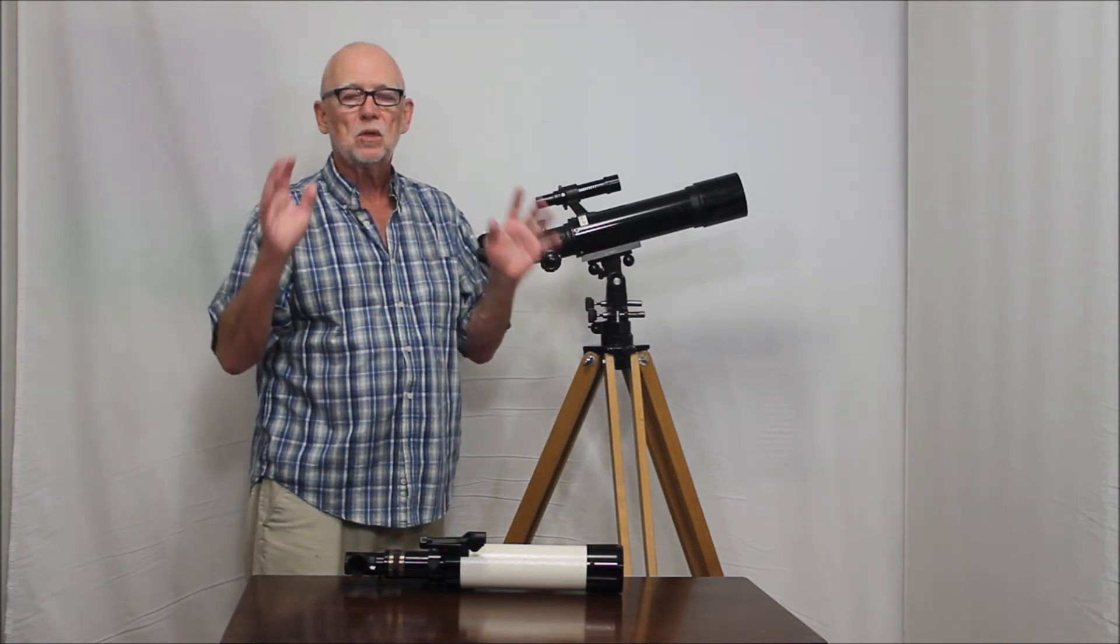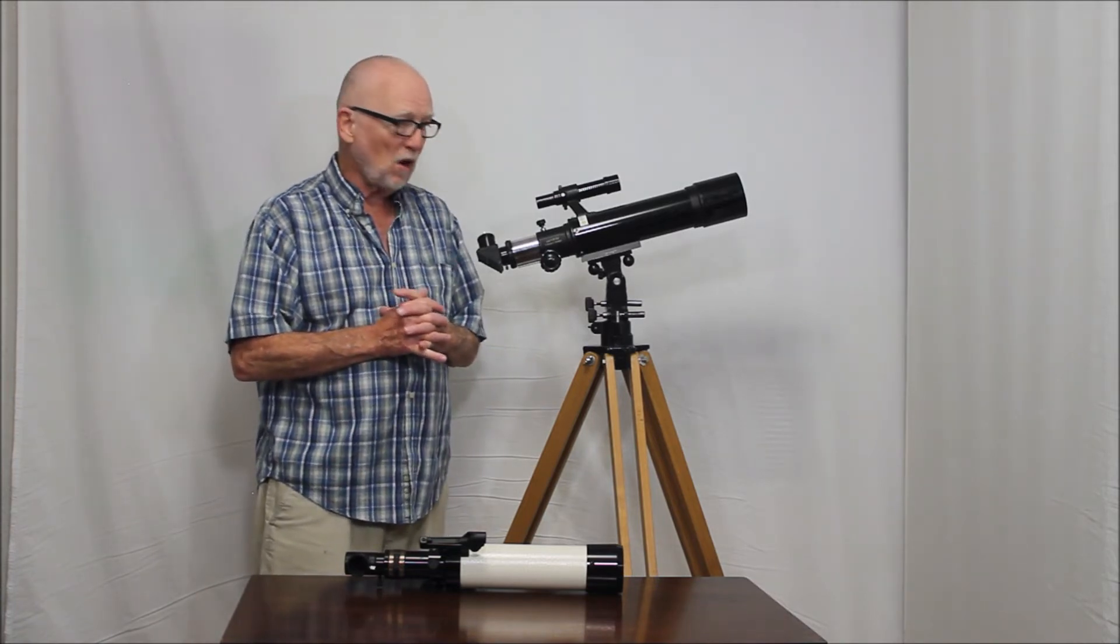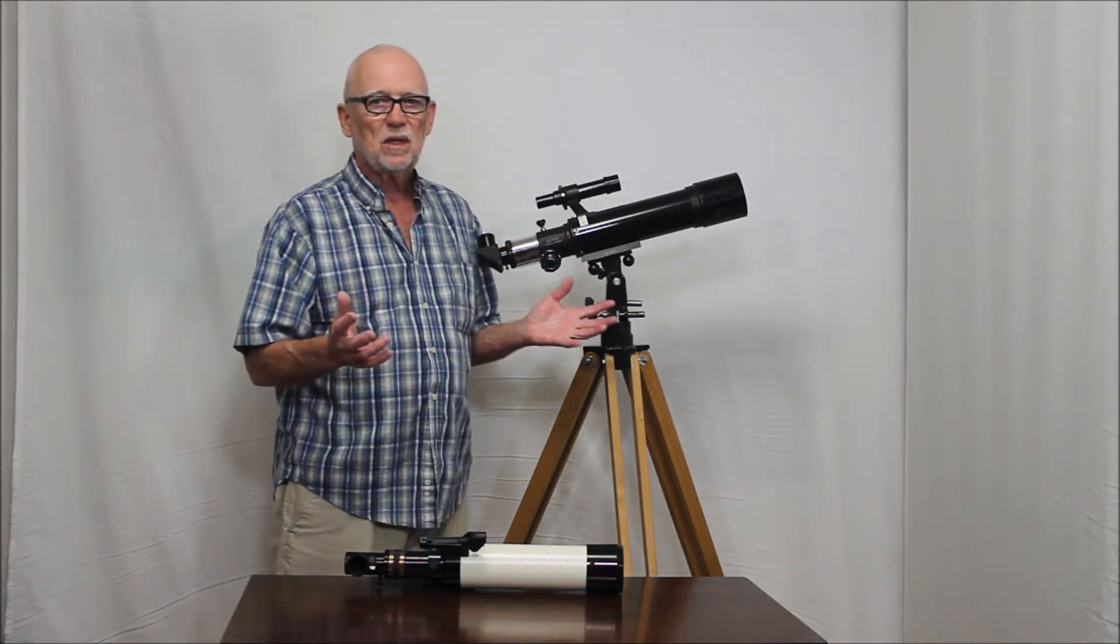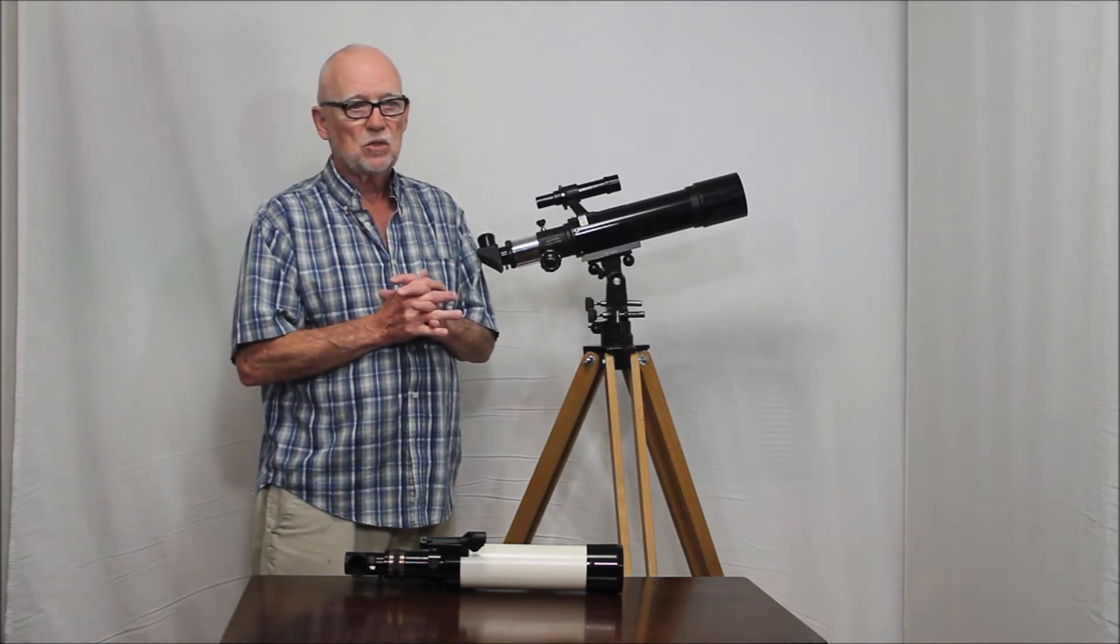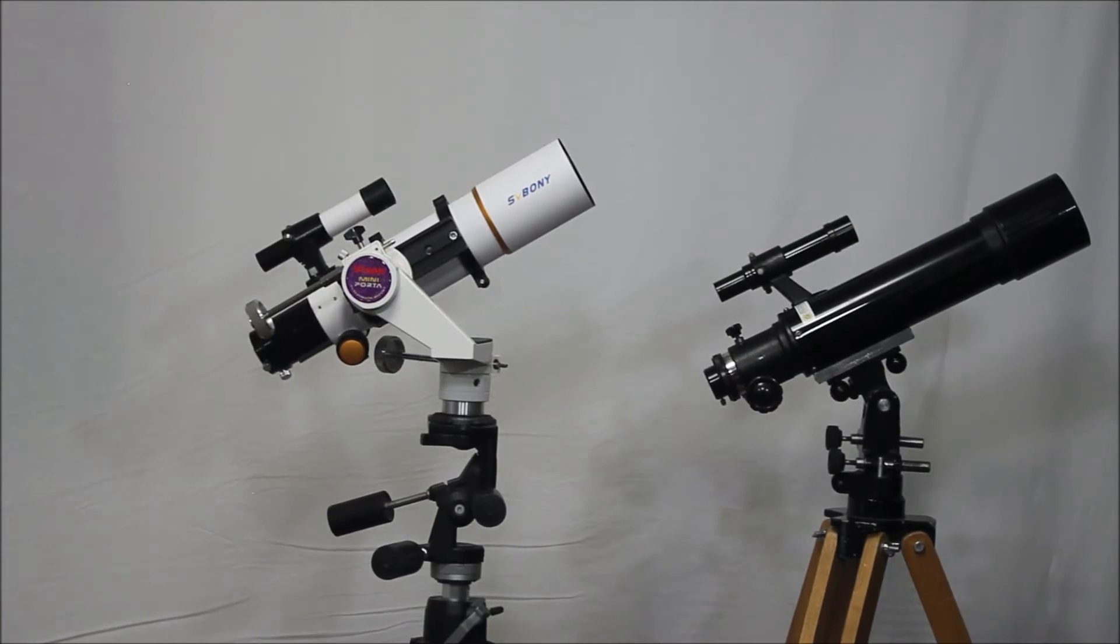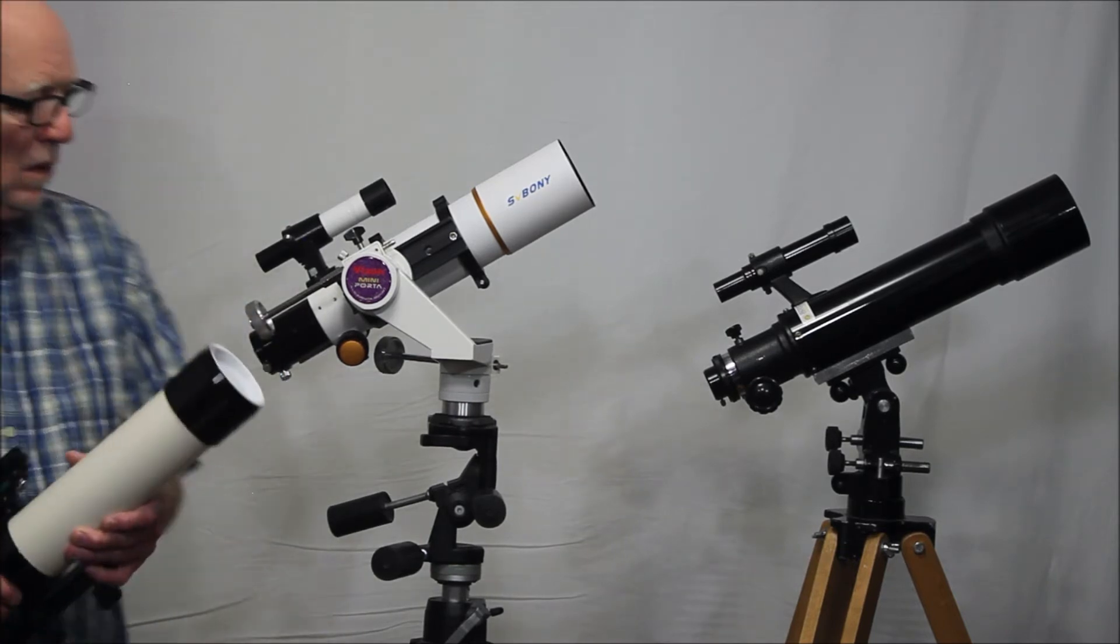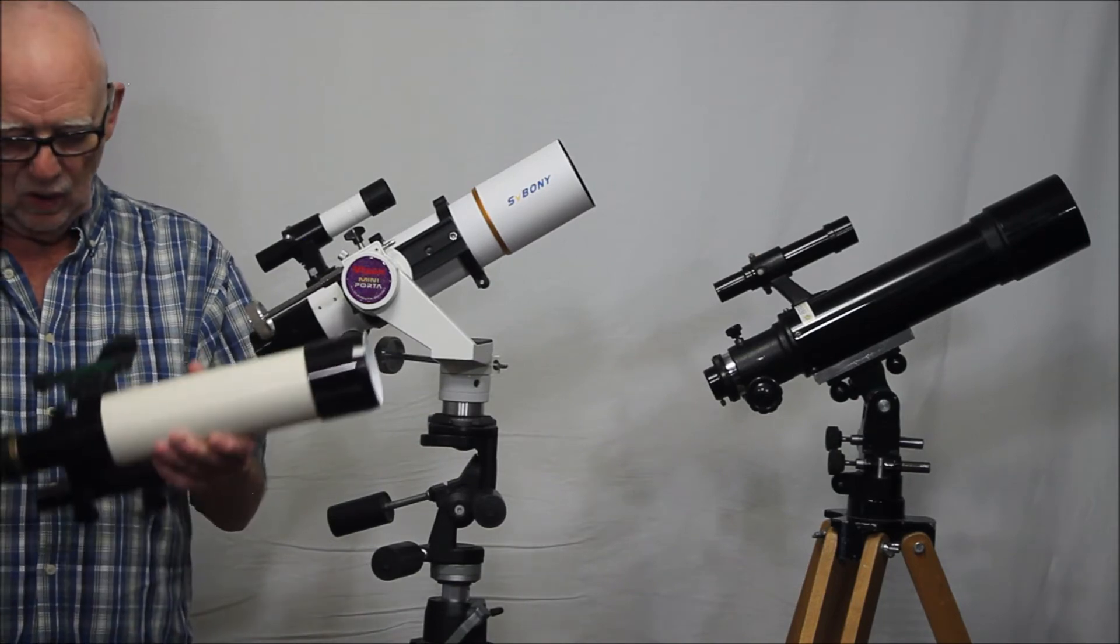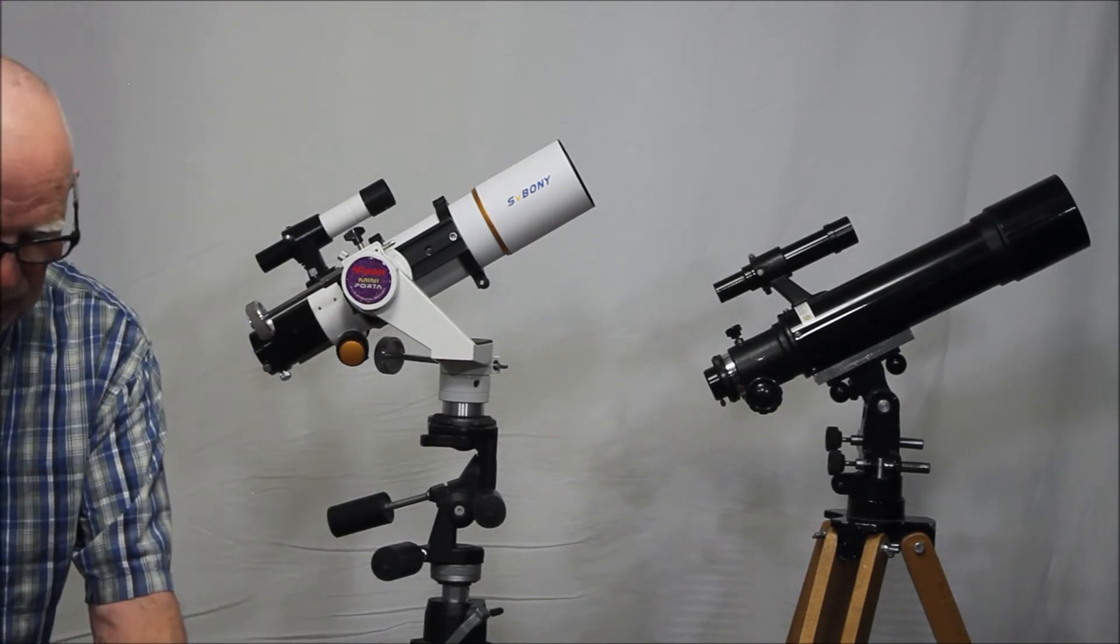And these scopes will be far better than your typical, like a short tube 80 or one of the more commonplace standard Achromats. Both of these scopes will beat one of those just into the ground. In addition to comparing the Orion 80 millimeter scope with the Teleview Ranger 70 millimeter scope, I also compared it to this scope.